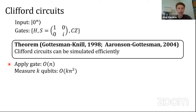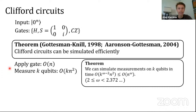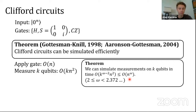I would be remiss if I didn't mention another result in our paper: working within the Aaronson-Gottesman framework, you can boil the measurement procedure down to matrix multiplication. If we assume we want to measure all n qubits, before we would have a runtime of n³, and we show that you can actually reduce this to n^ω, where ω is the matrix multiplication constant — so roughly two or a bit over two.